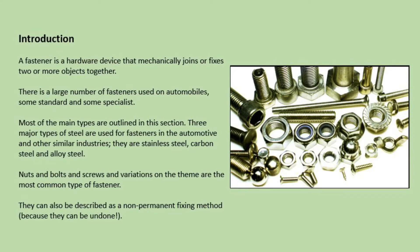Three major types of steel are used for fasteners in the automotive and other similar industries. They are stainless steel, carbon steel and alloy steel. Nuts and bolts and screws and variations on the theme are the most common type of fasteners. They can also be described as non-permanent fixing methods because they can be undone.